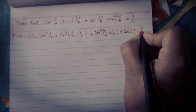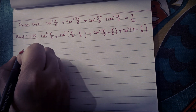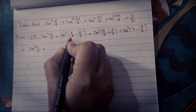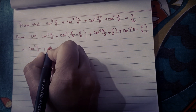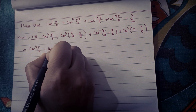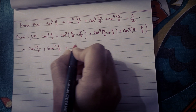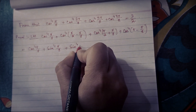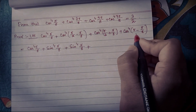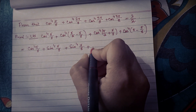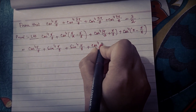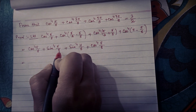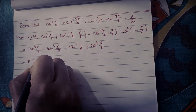So this is cos to the power 4 of π/8. Now, cos(90 minus θ) equals sin θ, so that term becomes sin to the power 4 of π/8. The term with (90 plus θ) also gives sin to the power 4 of π/8. And cos(180 minus θ) equals cos θ again, so that term is cos to the power 4 of π/8. This equals 2 cos to the power 4 of π/8 plus 2 sin to the power 4 of π/8.